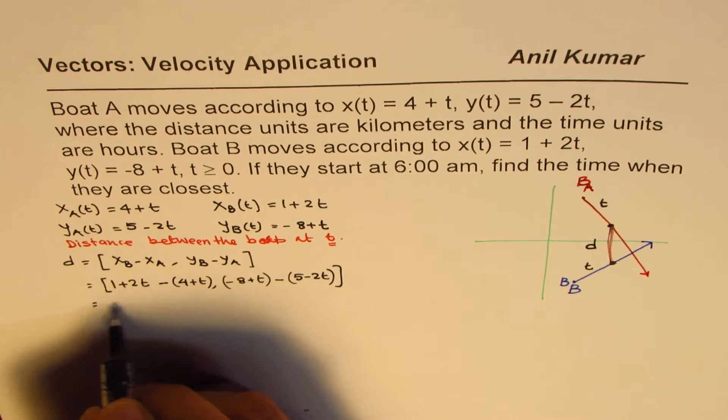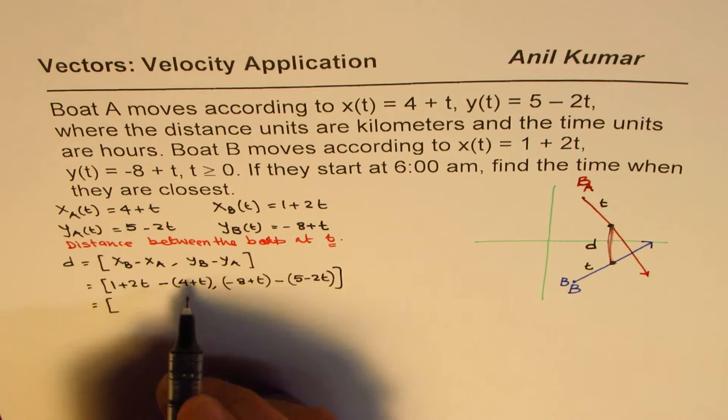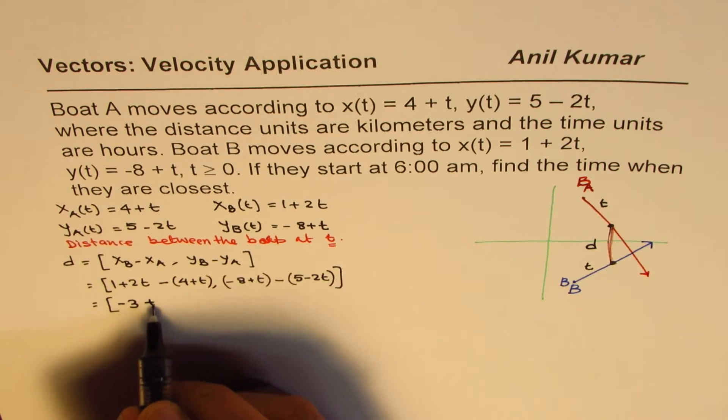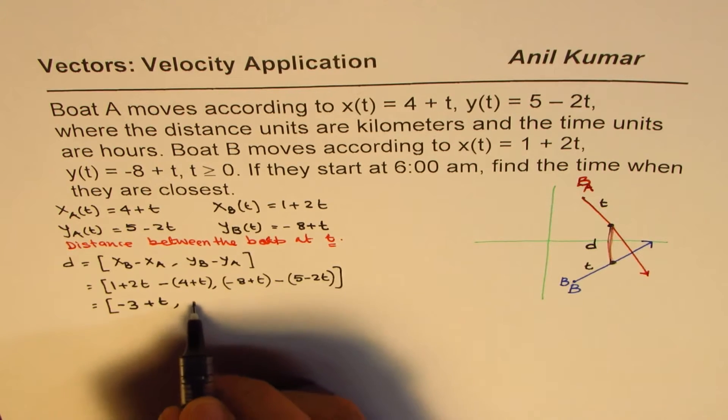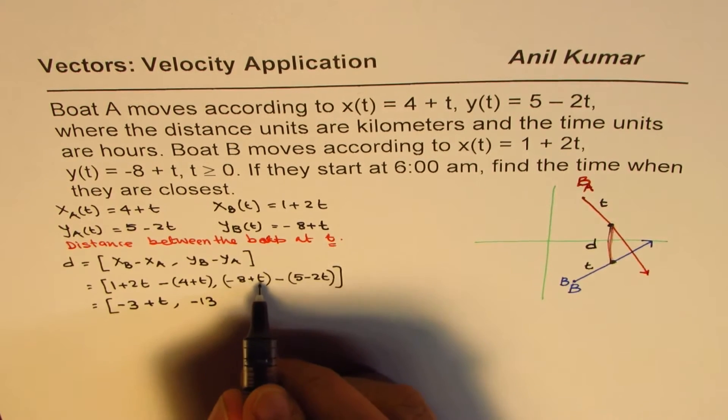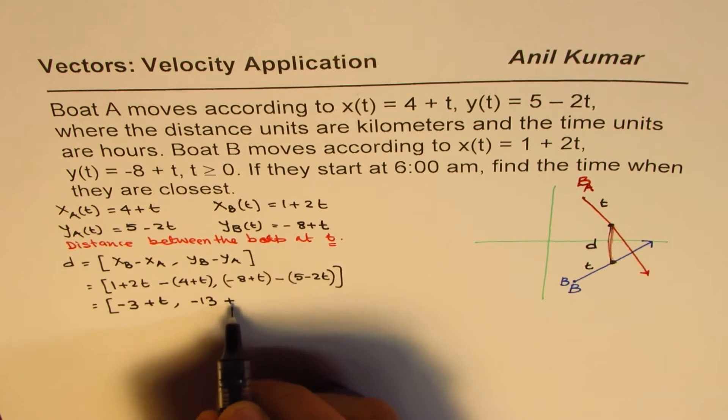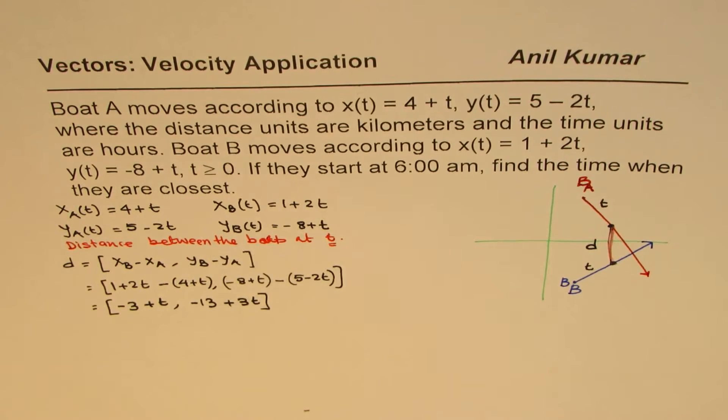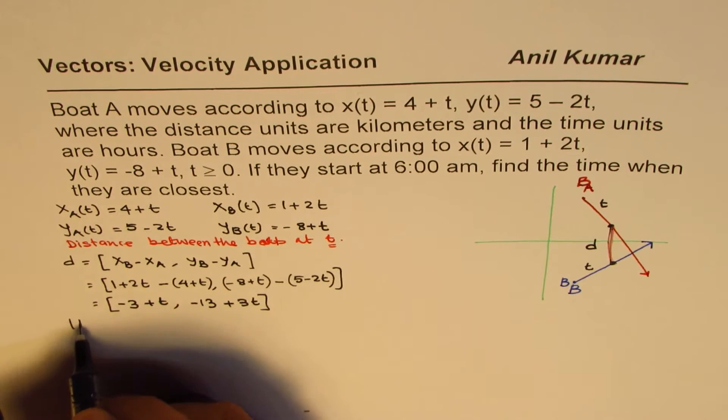Let's simplify this. That gives us 1 - 4 as -3, 2t - t is +t, -8 - 5 is -13, plus t minus -2t, that means you add this up, that means 3t. So that is the distance.